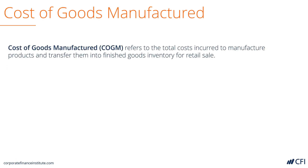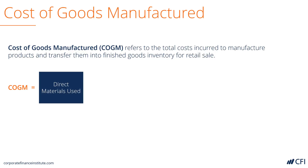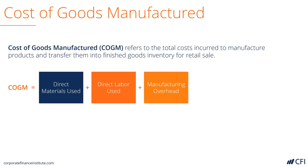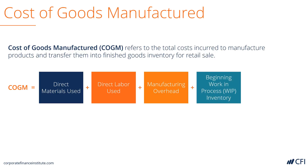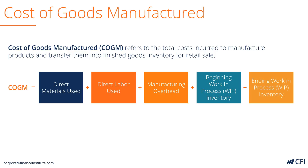Cost of goods manufactured is the cost a company incurs to make the goods that it is going to sell as finished inventory. The formula for cost of goods manufactured equals the direct materials used to make the item, plus the direct labor used to build the item, plus any manufacturing overhead allocated to it, plus the beginning work in progress inventory, minus the ending work in progress inventory.